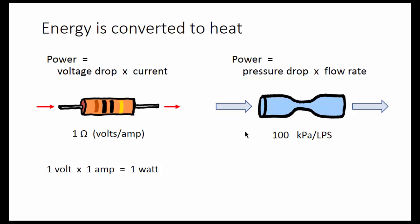For this hydraulic resistor, if the resistance is 100 kilopascals per liter per second, and the pressure drop is 100 kilopascals with a flow rate of 1 liter per second, the power dissipation is 100 watts.